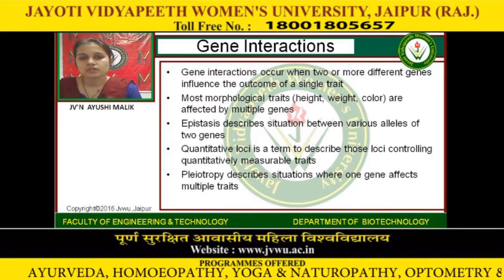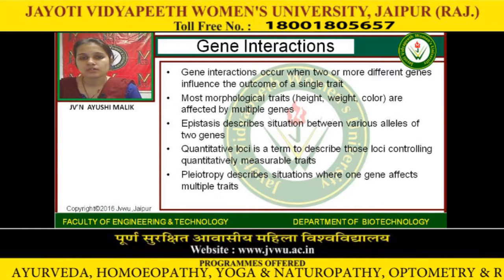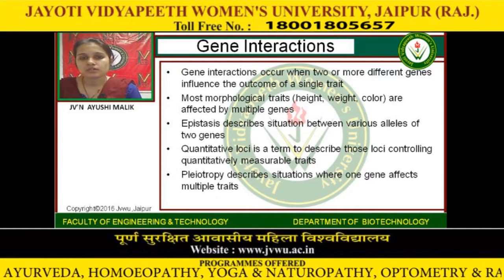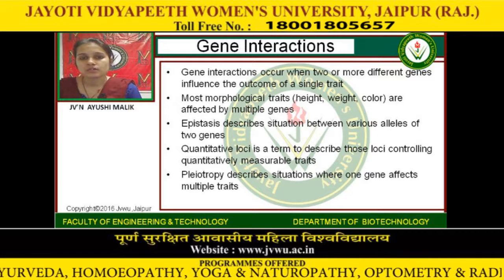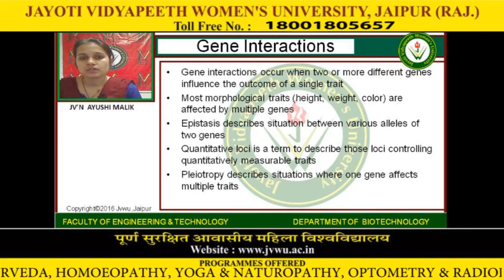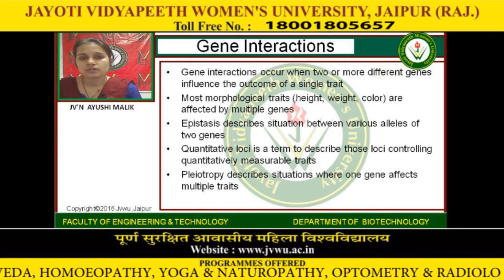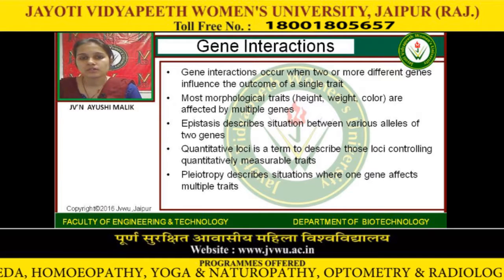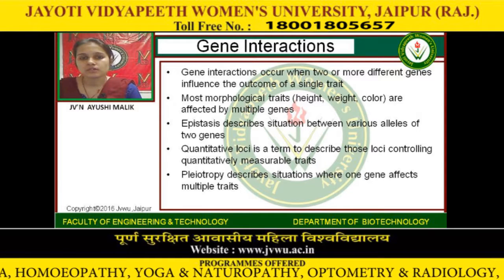Gene interaction occurs when two or more different genes influence the outcome of a single trait. Most morphological traits — i.e., height, weight, and color — are affected by multiple genes.